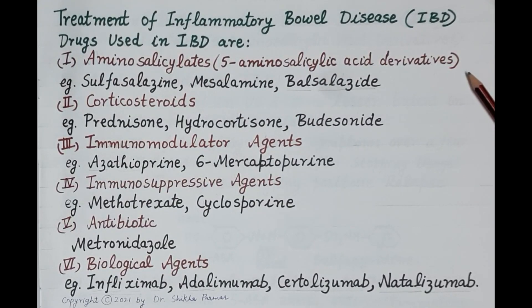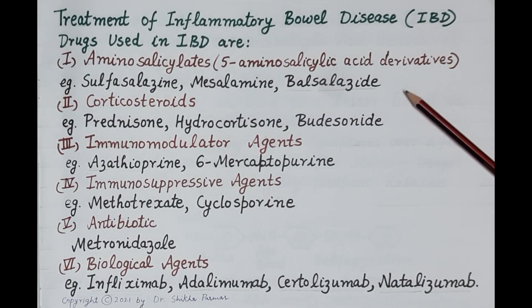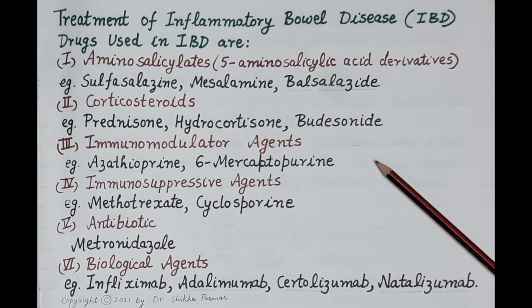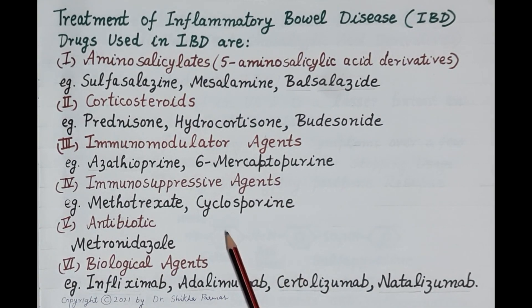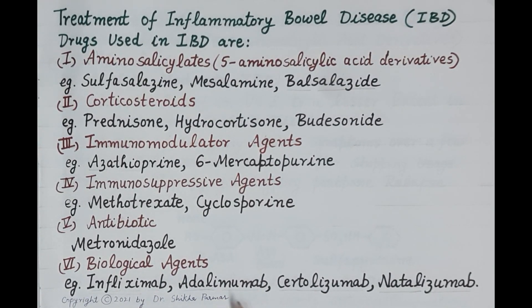Drugs used in the treatment of inflammatory bowel disease are classified as: aminosalicylates (5-aminosalicylic acid derivatives), for example sulfasalazine, mesalazine, and balsalazide; corticosteroids like prednisone, hydrocortisone, and budesonide; immunomodulator agents like azathioprine and 6-mercaptopurine; immunosuppressive agents like methotrexate and cyclosporine; antibiotics like metronidazole; and biological agents like infliximab, adalimumab, certolizumab, and natalizumab.